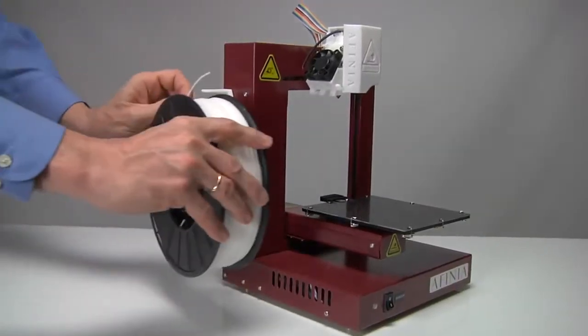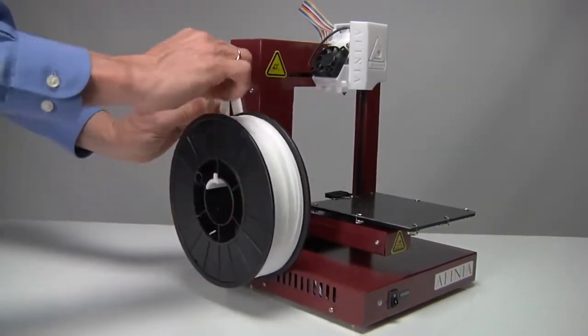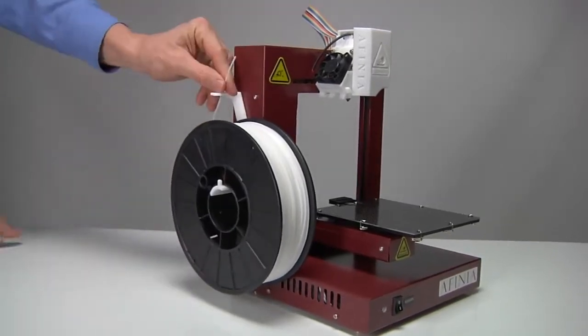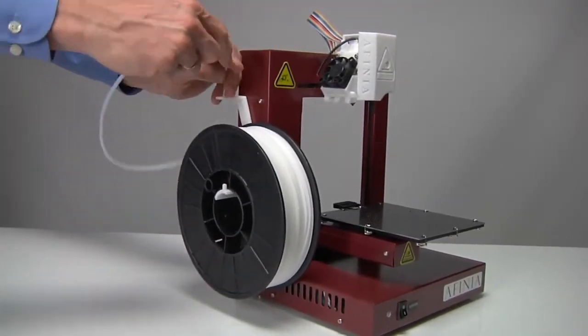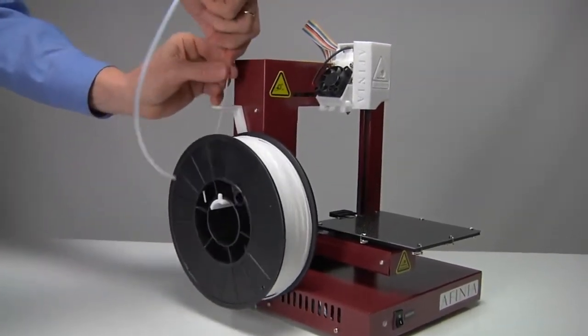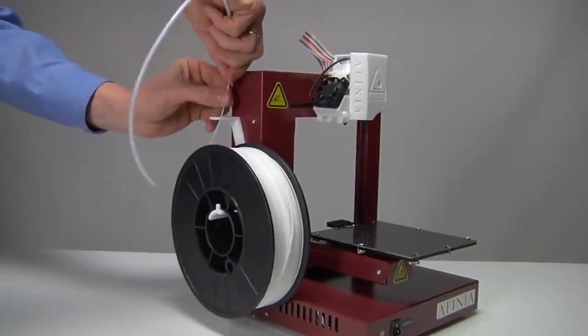Put the filament spool onto the spool holder with the end of the filament pointing up from the back. Thread the filament through the filament guide at the top of the spool holder. Insert the end of the filament into one end of the filament tube.